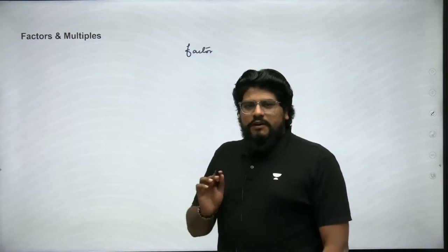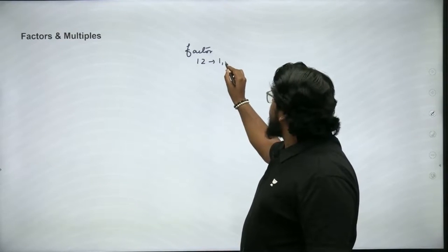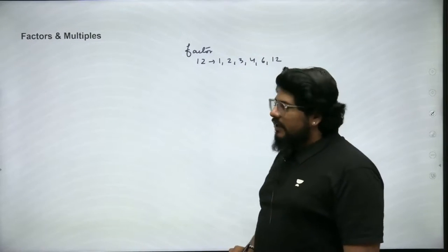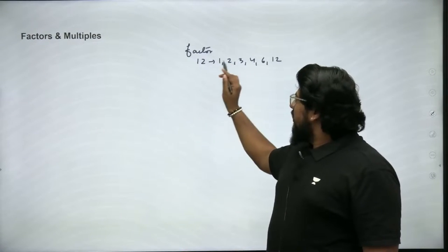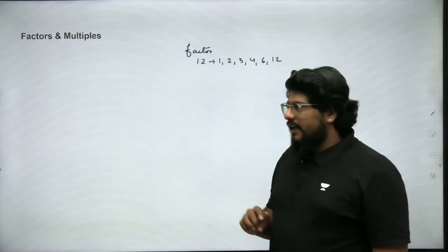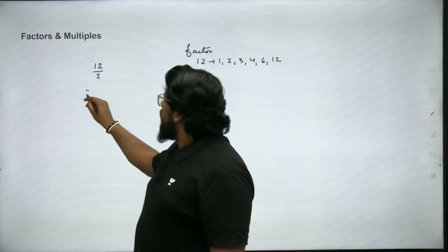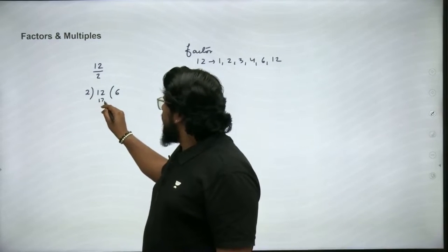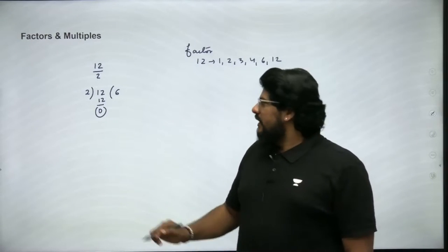A factor is a number which perfectly divides a given number. For example, the factors of 12 are 1, 2, 3, 4, 6, and 12. These are the factors of 12. If we call them factors, they should divide the given number. So if I divide 12 by 2, it goes 6 times and leaves a remainder of 0.